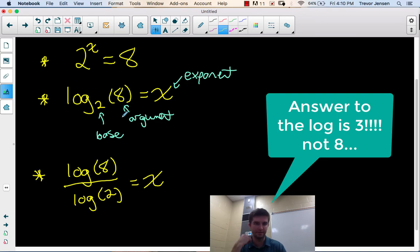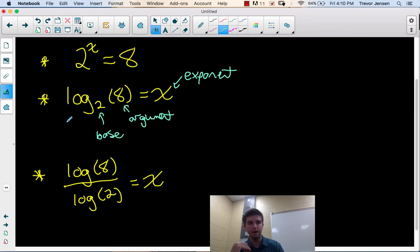Log by itself doesn't mean anything. This isn't log multiplied by 8. It's the log base 2 of 8. So this whole thing together, the log with the base and the argument, make up one number. The value of this is just 3.